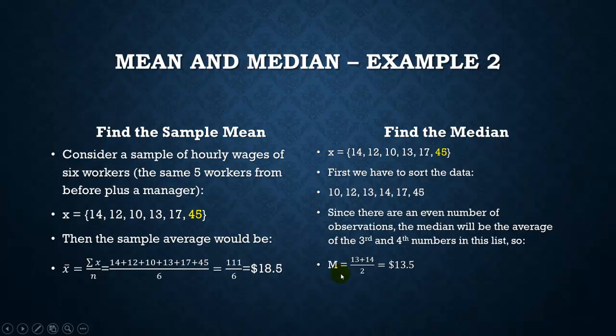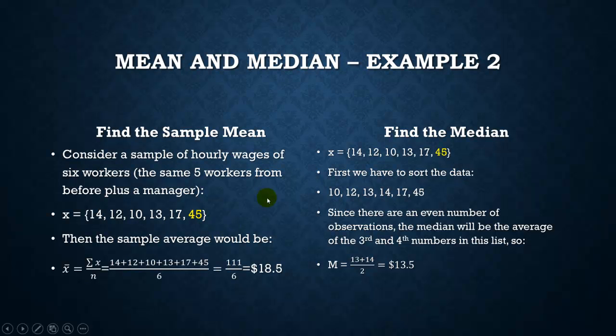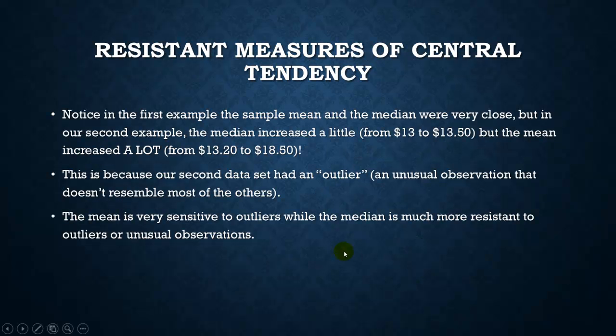And notice how big the difference is. So why is there this big difference? So in our first example, if you remember, our median went from $13 to $13.50 in our second example. But the mean increased by a lot. It went from $13.20 to $18.50. This happened because of that outlier, that one very large observation. The mean was really impacted by that one outlier, where the median hardly changed at all. It only changed by $0.50 as opposed to several dollars. What our conclusion is, is that this outlier, or very unusual observation, means are going to be very sensitive to outliers. In other words, a very large or very small number is going to grossly impact an average or a mean. But an outlier isn't going to affect a median very much at all.